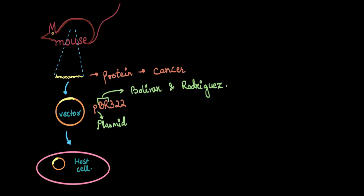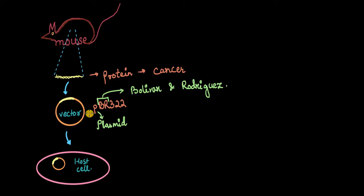In pBR322, 'p' comes from the word plasmid, 'BR' comes from Bolivar and Rodrix — the two brilliant scientists who created this vector — and '322' is the number given by the lab to this particular vector. There is no data telling us why this number came up, but we can assume it was perhaps sample number 322 that ultimately turned out to be the perfect vector.